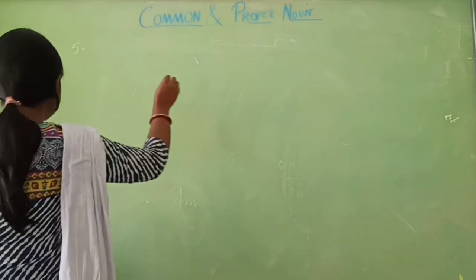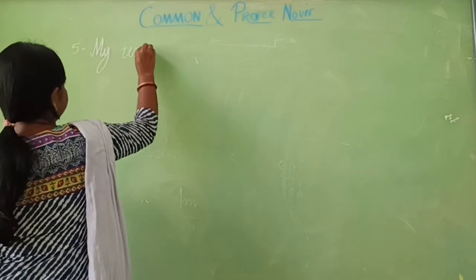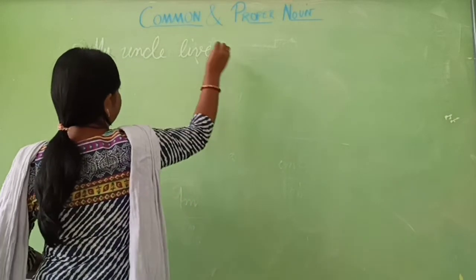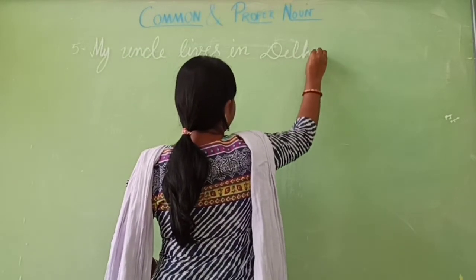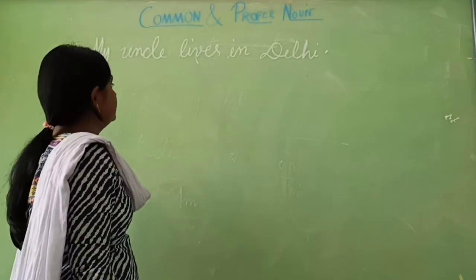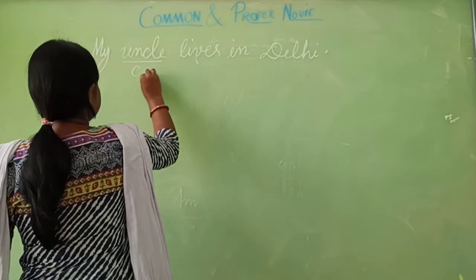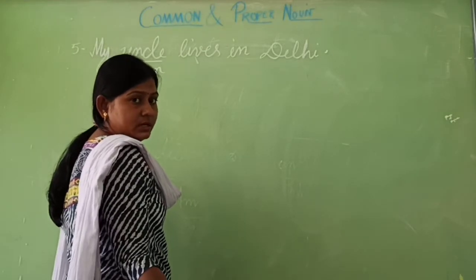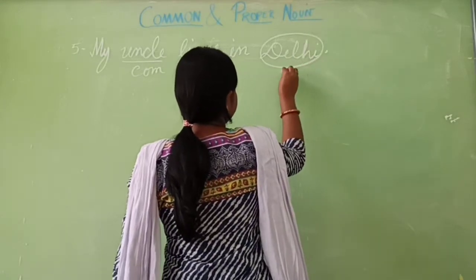Next sentence: My uncle lives in... Ankit is the common name of a person, so it is a common noun, and there is a special name of a place, so it is a proper noun.